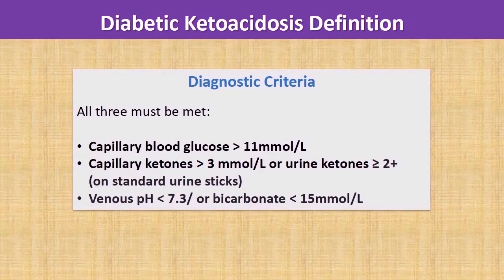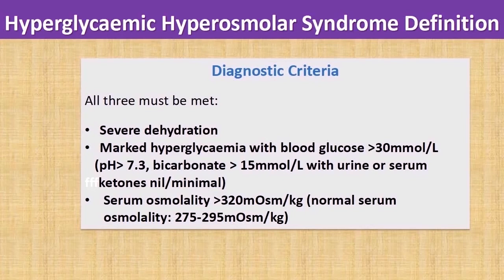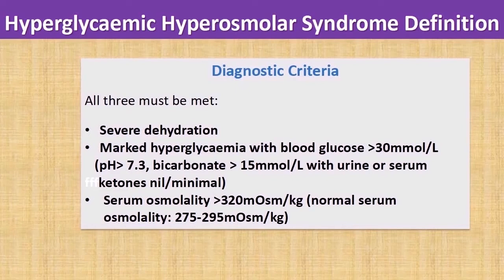Now we look at the diagnostic criteria for hyperglycemic hyperosmolar syndrome. Again it is represented by a triad, but distinctly different from DKA. The first criterion is the presence of severe dehydration. The second is marked hyperglycemia, defined as blood glucose more than 30 mmol/L. Ketosis and metabolic acidosis should not be present in pure HHS. The third criterion is serum osmolarity greater than 320 mmol/kg, consistent with severe dehydration.